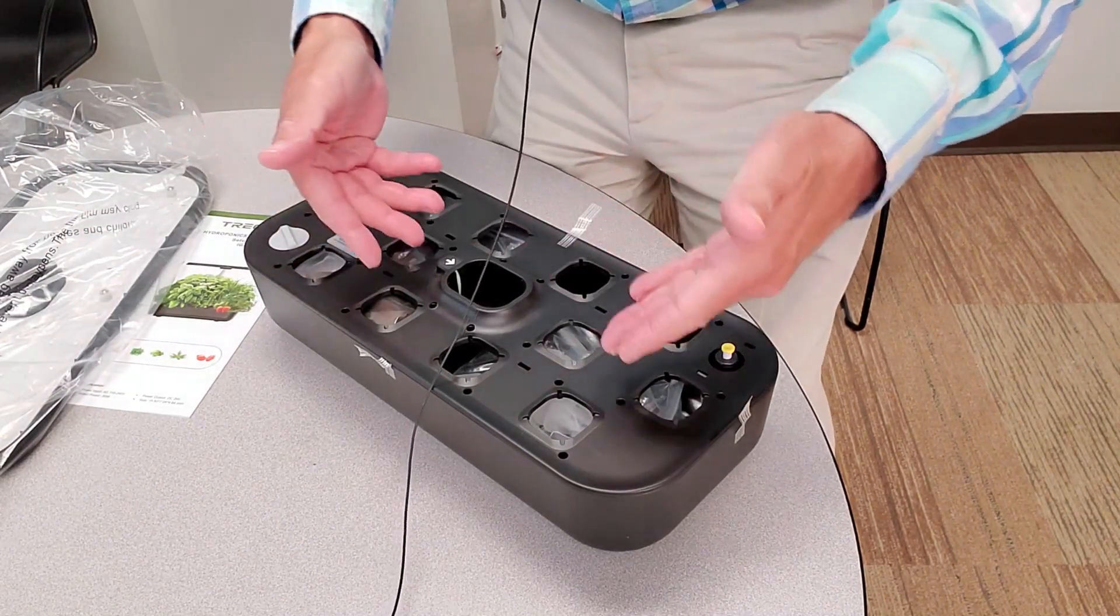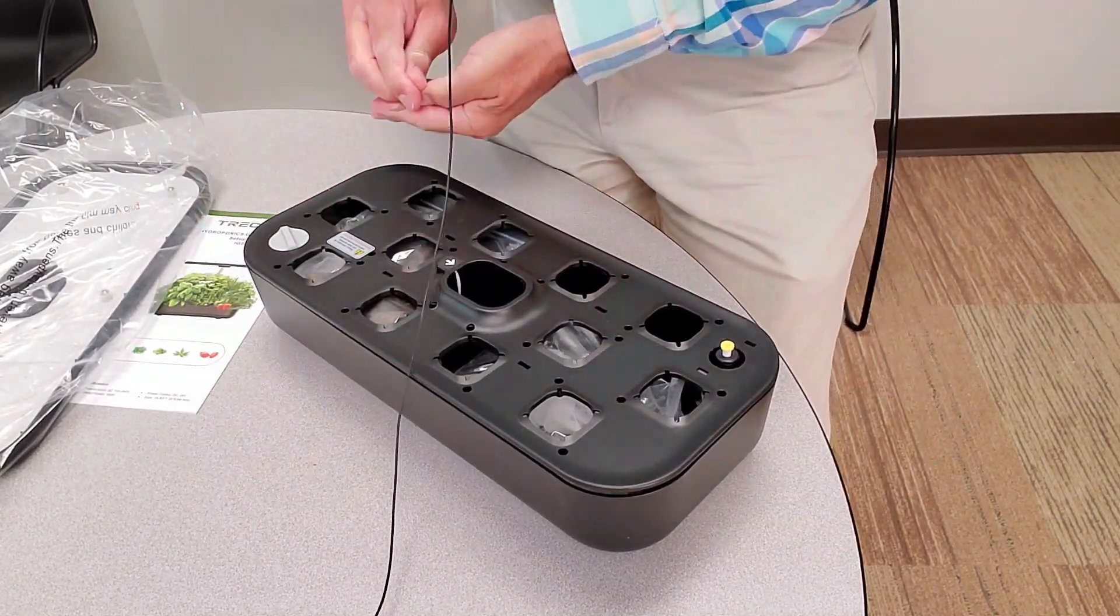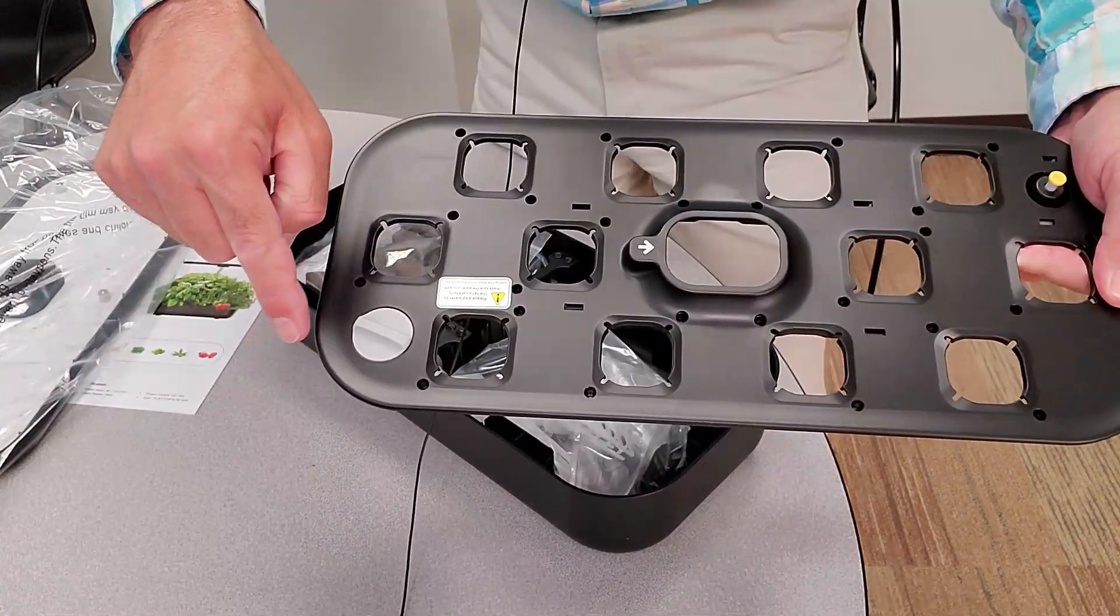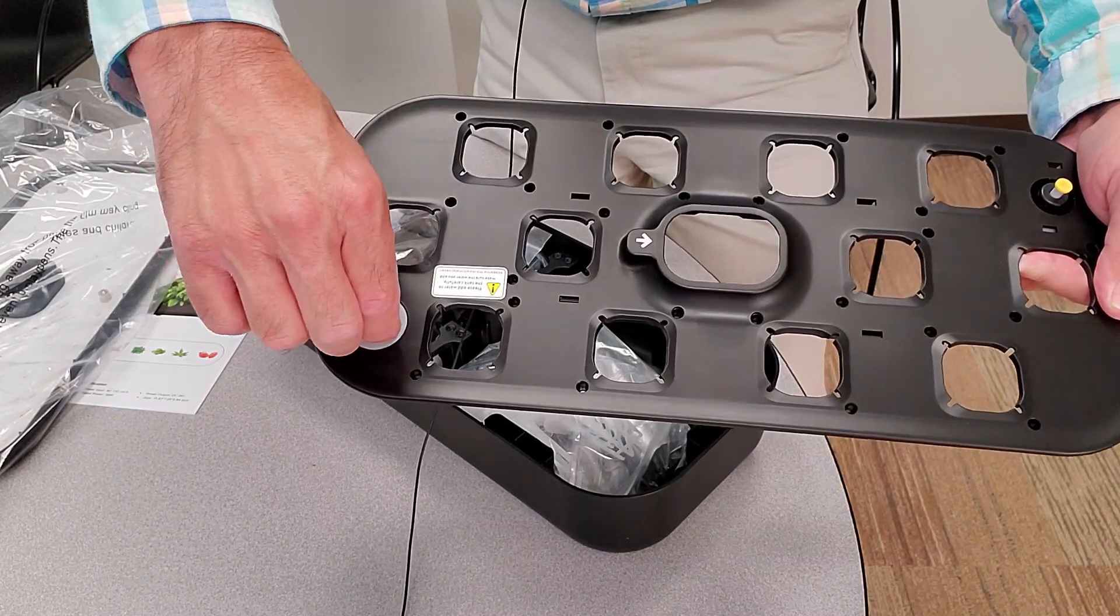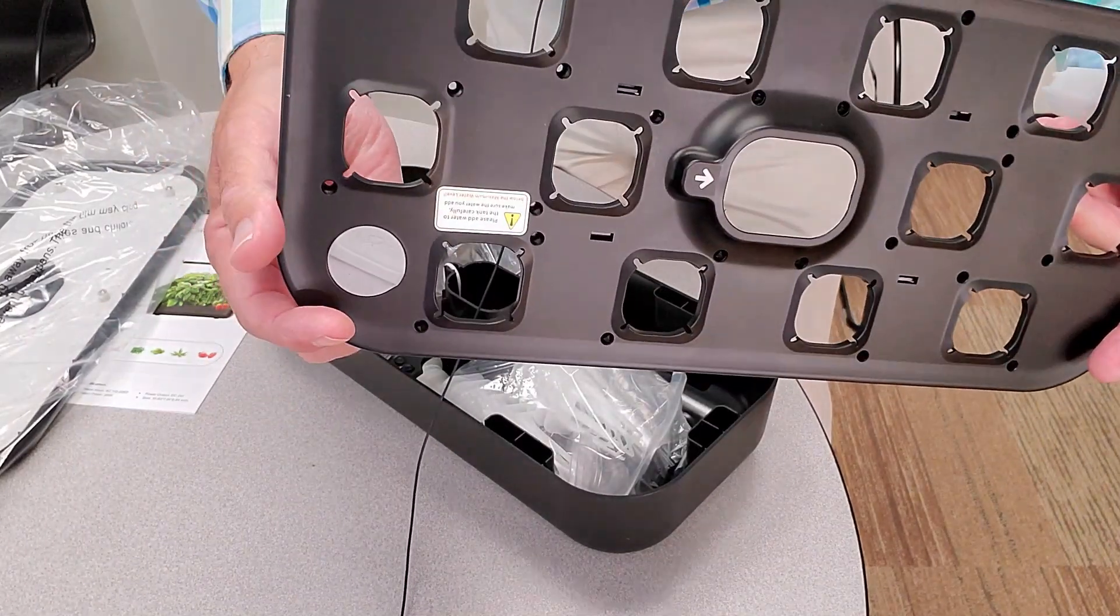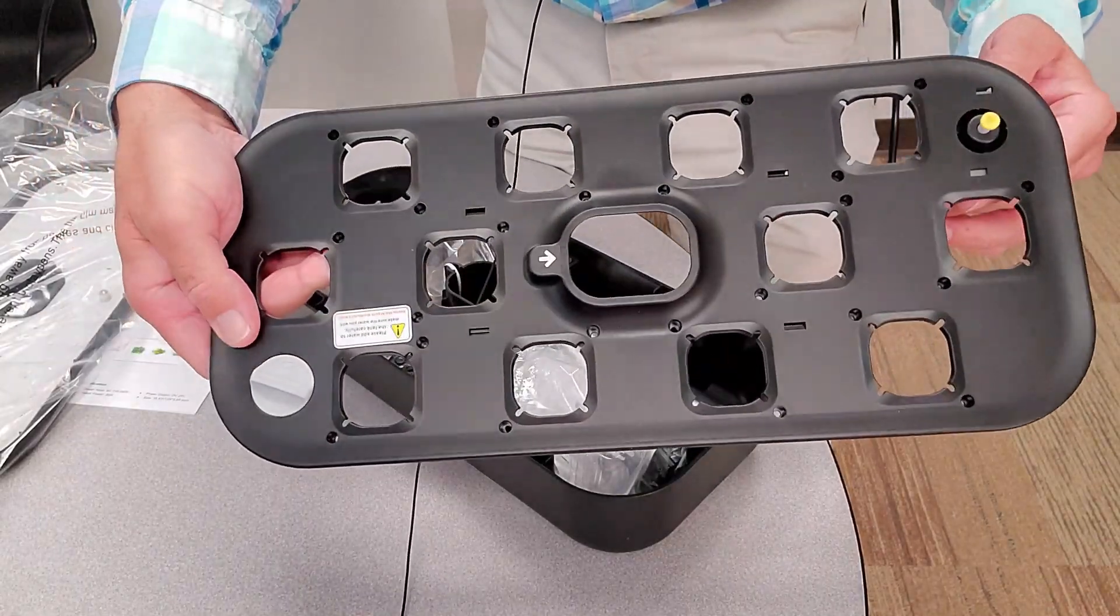So let's go ahead and pull this off and take a quick look. In order to fill the nutrients, they do have a convenient fill spout, which is on the corner. And that's a nice configuration.